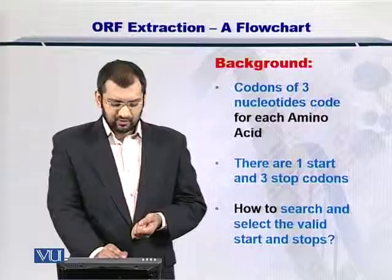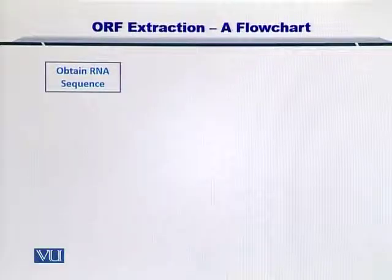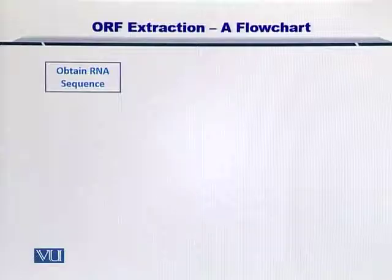So let's take a look at the flow chart. First, you start with obtaining the RNA sequence. In case you do not have the RNA sequence and instead have the DNA sequence, you can simply replace the T's with U's and therefore you will arrive at the RNA sequence yourself.